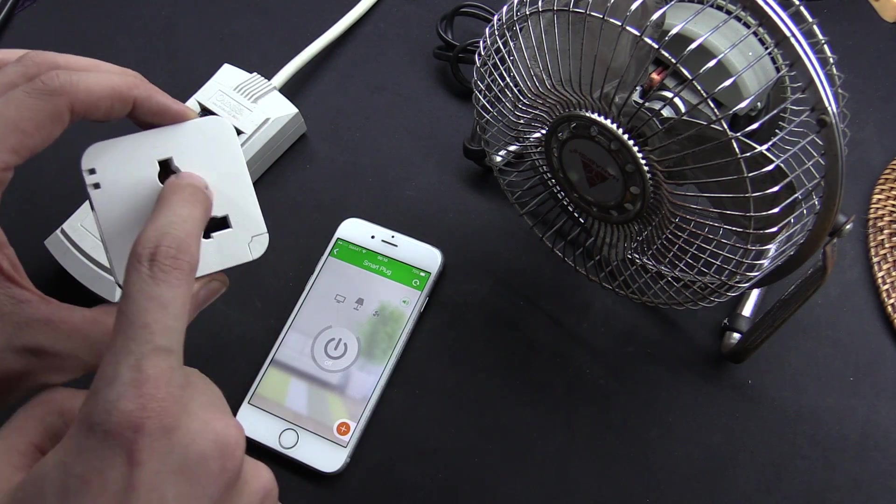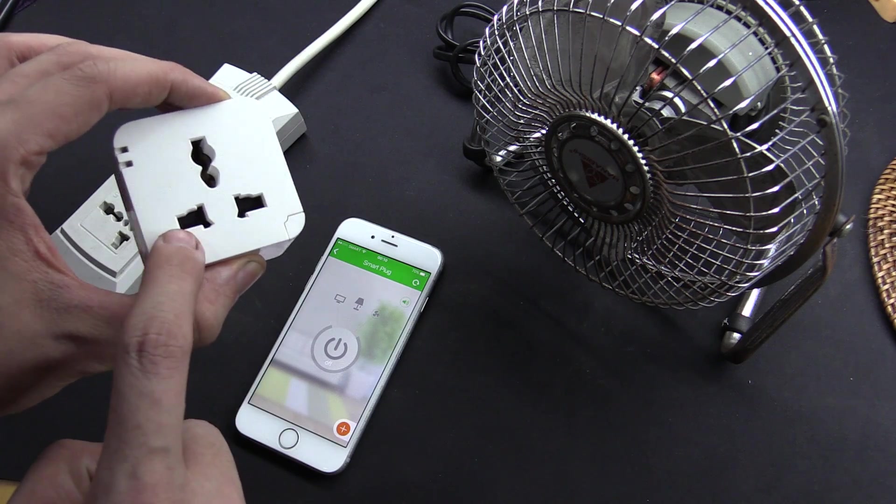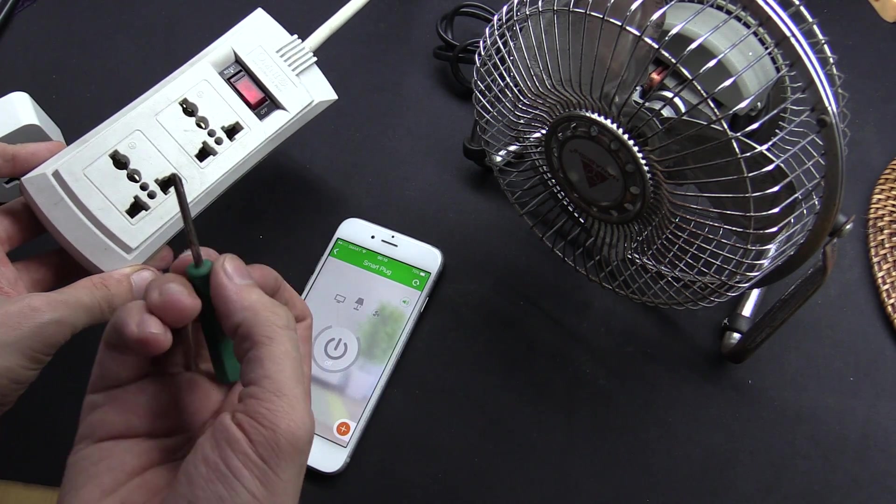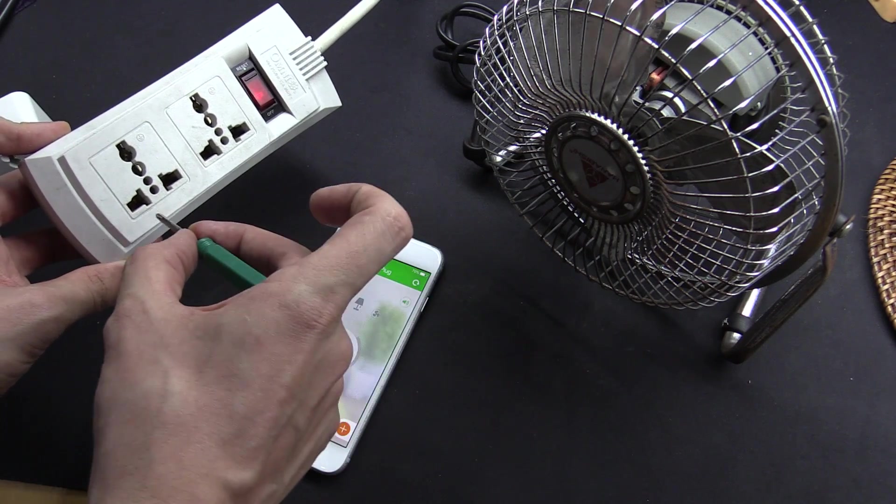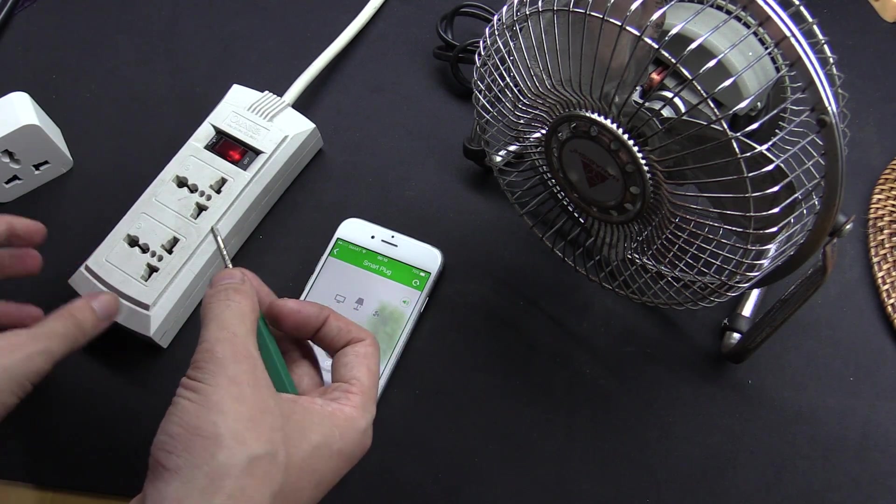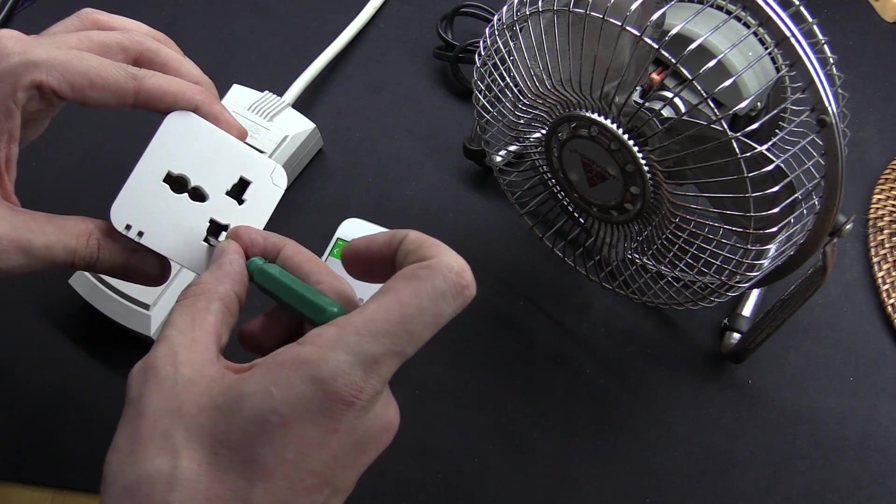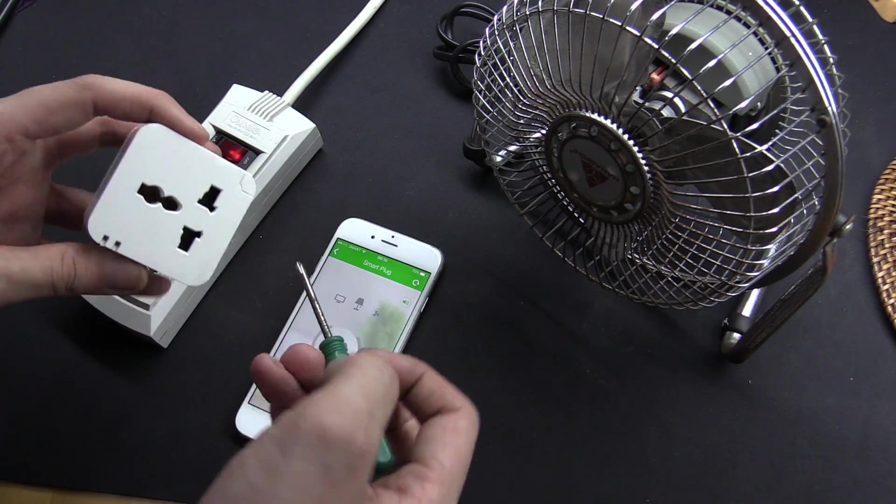Now the interesting thing as well is not only is this a universal socket, but they've got safety shutters on the front here. Let me show you. If you look at this socket here, if I was to hold this metal screwdriver and then insert it, I would get an electric shock, maybe die. But with this one, they've got safety shutters. So you can't actually touch the live AC.